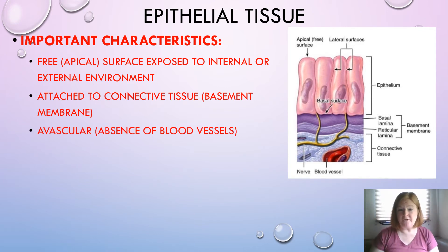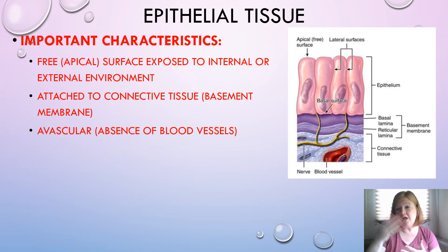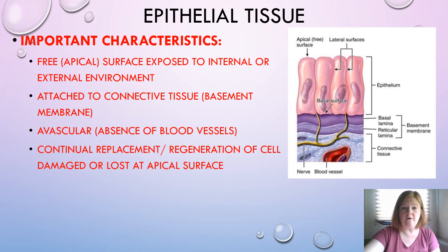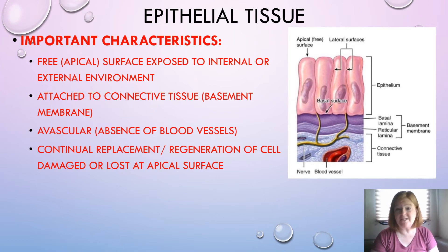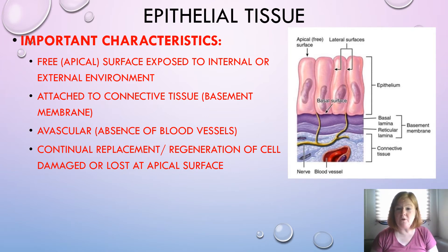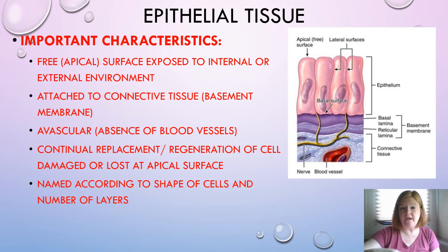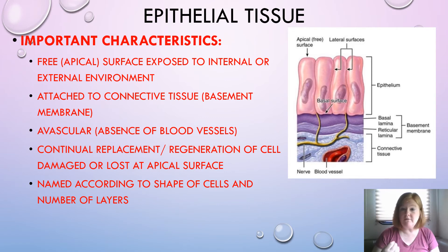Epithelial tissue is avascular — there's an absence of blood vessels — which is why having connective tissue close by is important, since that contains the blood vessels used to nourish the epithelial tissue. There is continual replacement of epithelial tissue through regeneration of cells that are damaged or lost, especially at the apical surface. Epithelial tissues are named according to the shape of the cells and the number of layers, and we'll cover this in greater detail when we do epithelial tissue exclusively.